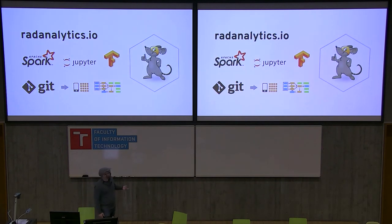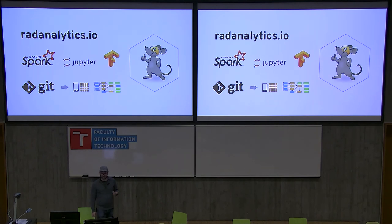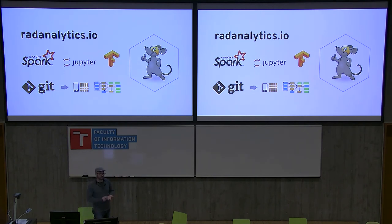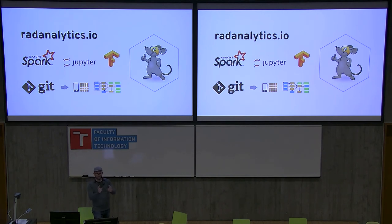The first community I want to talk about is RadAnalytics.io, which is targeted at application developers and provides tooling and a downstream distribution to make it easy to develop intelligent applications in containers on OpenShift. One cool thing RadAnalytics does is provide an S2I builder that takes a specification for an application and deploys both the application and a Spark cluster it can use in the same OpenShift project. You have a compute cluster scoped to your application — when your application goes away, the compute cluster goes away too.